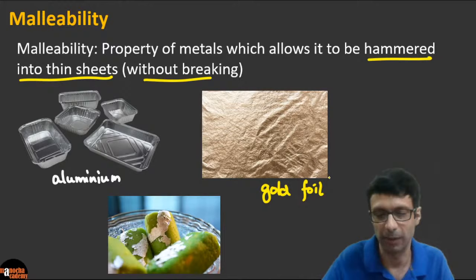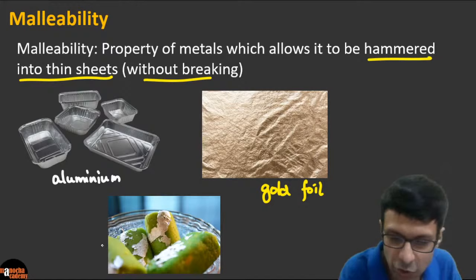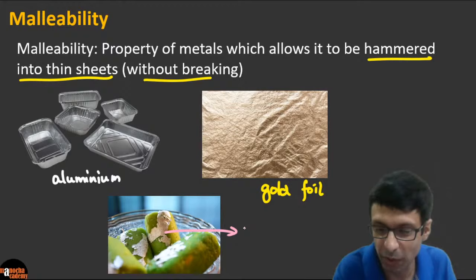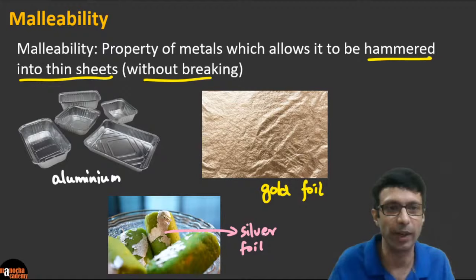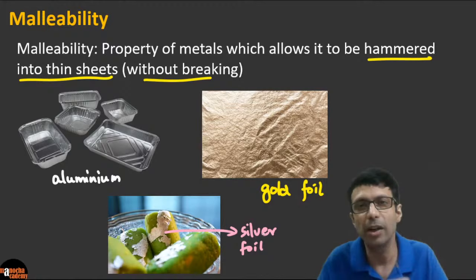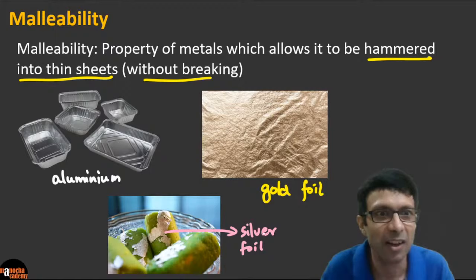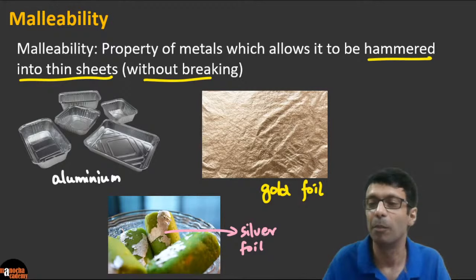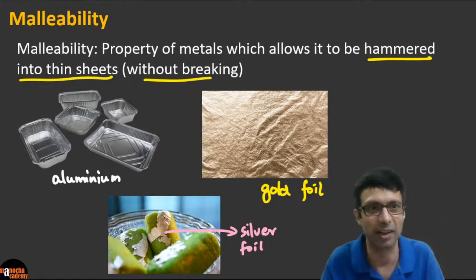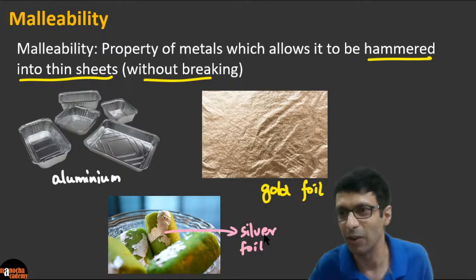Another example is gold — you can beat gold into a thin sheet, it's malleable. And silver — in Indian sweets we put silver foil to decorate them, because silver is also highly malleable and can be hammered into very thin sheets. Aluminium foil is what we commonly use in the kitchen.